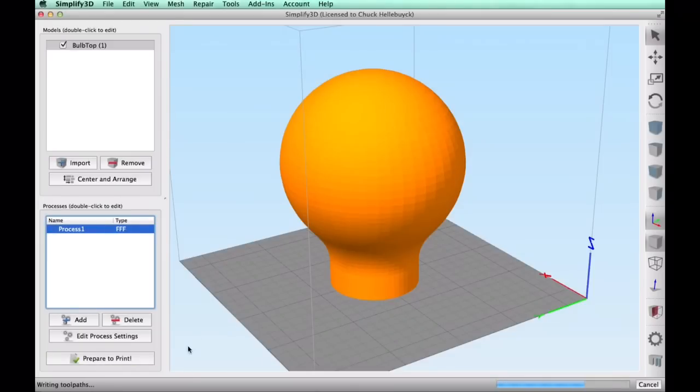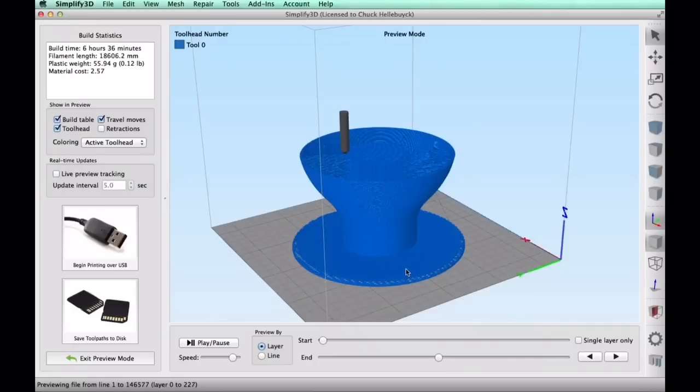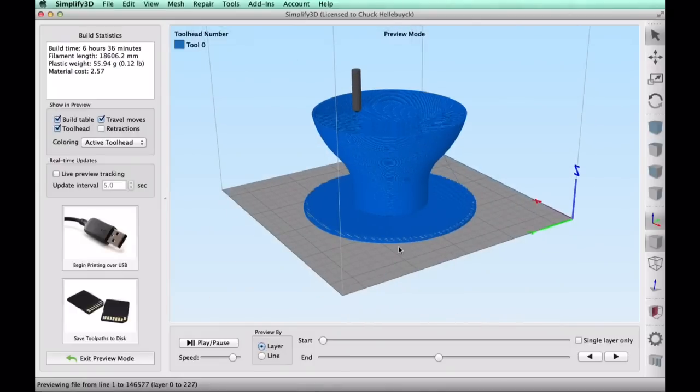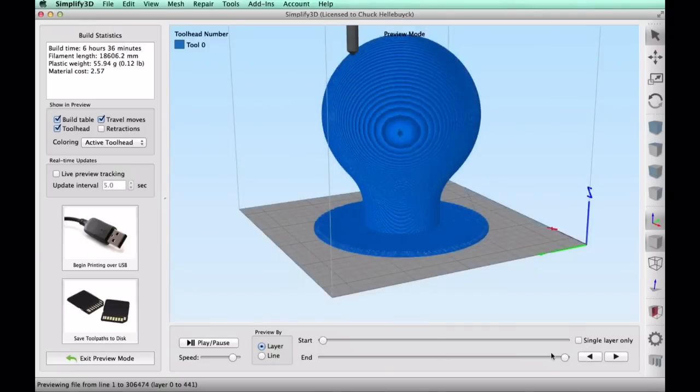So I clicked on prepare to print and this took a little bit longer because of all the rounded edges. But when it was done it looked pretty good and when I scrolled down here to see how it looked, I could see that the support structure was fitting together and building exactly the way I wanted it. Right in the center and this should be easy to remove. So now it was ready to send to the printer.